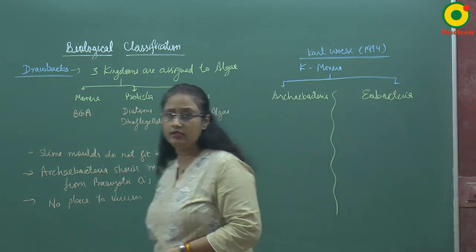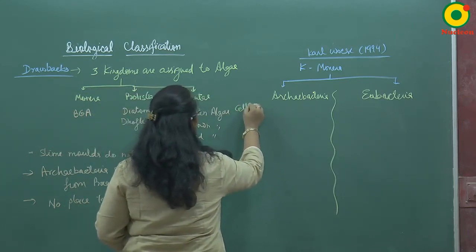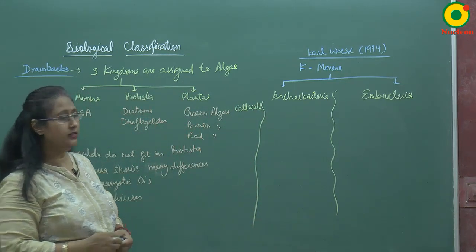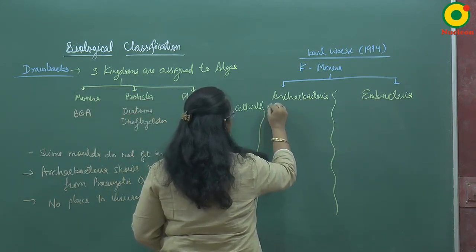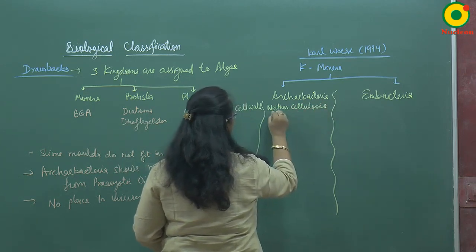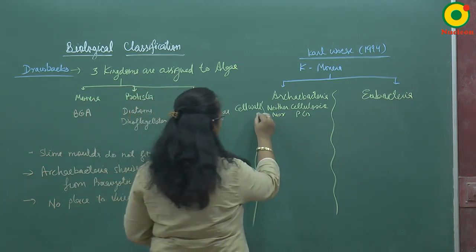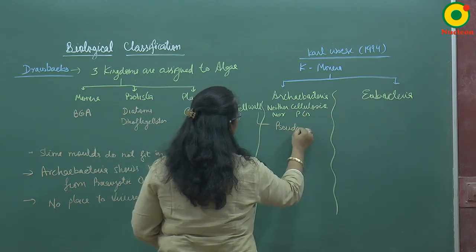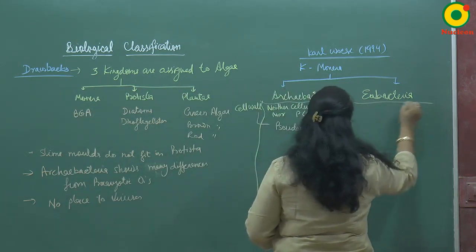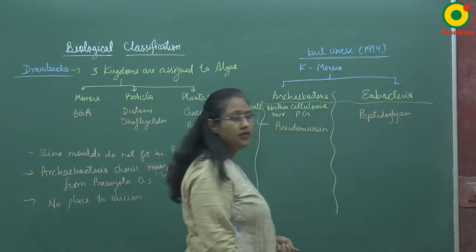Let's see the basis for the distinction between these two kingdoms. First, on the basis of the cell wall: in Archaebacteria, the cell wall is neither made of cellulose nor peptidoglycan. Instead it is made of pseudomurein, also known as pseudopeptidoglycan.